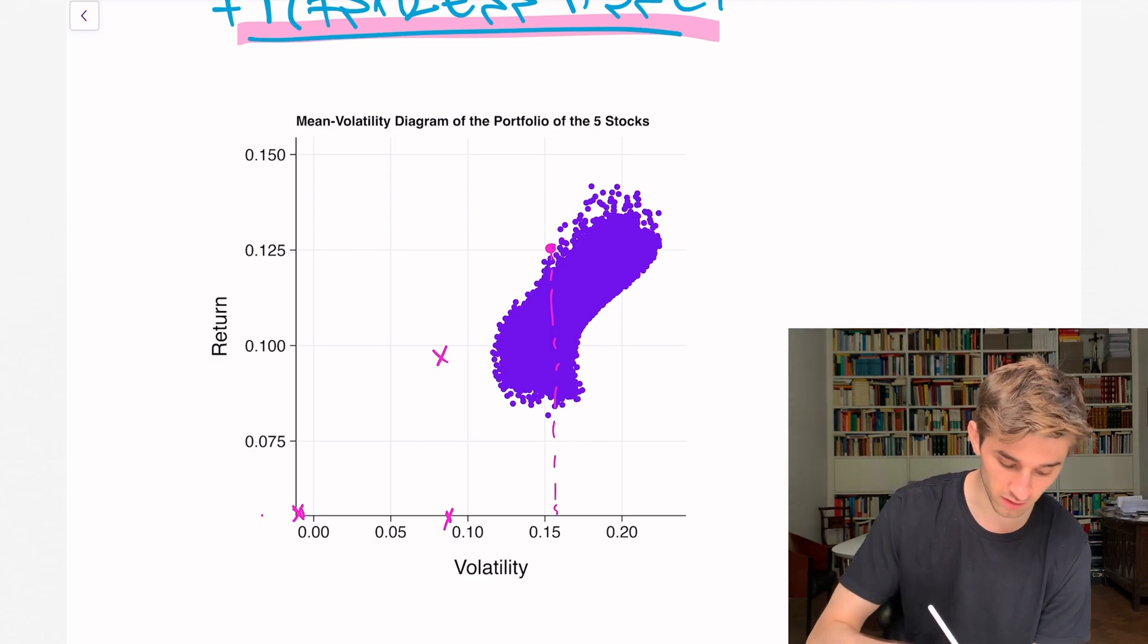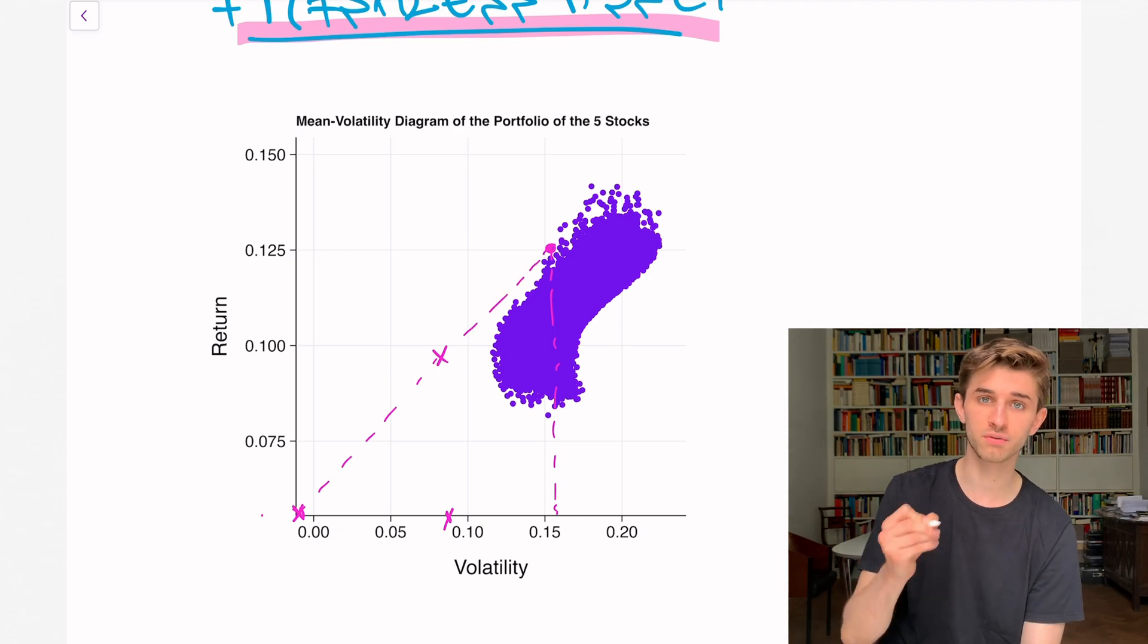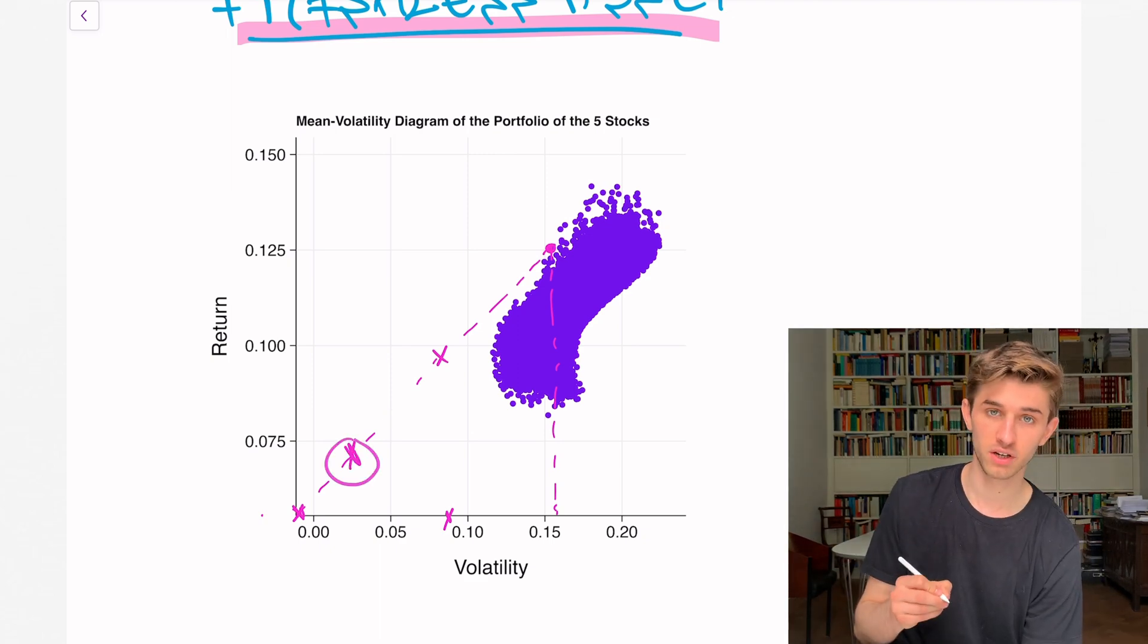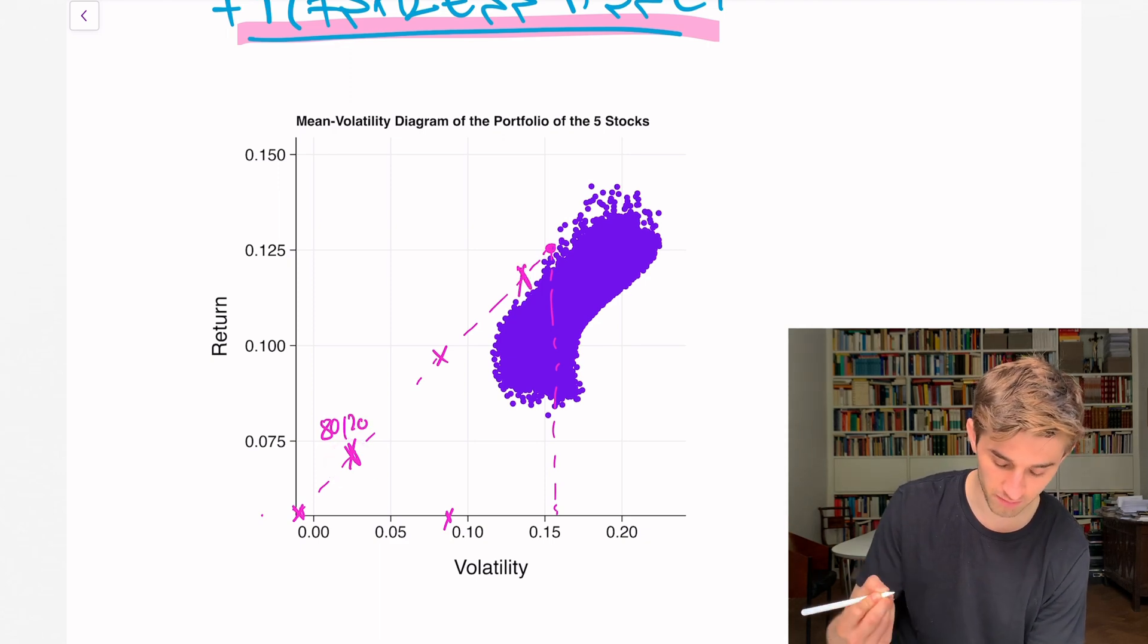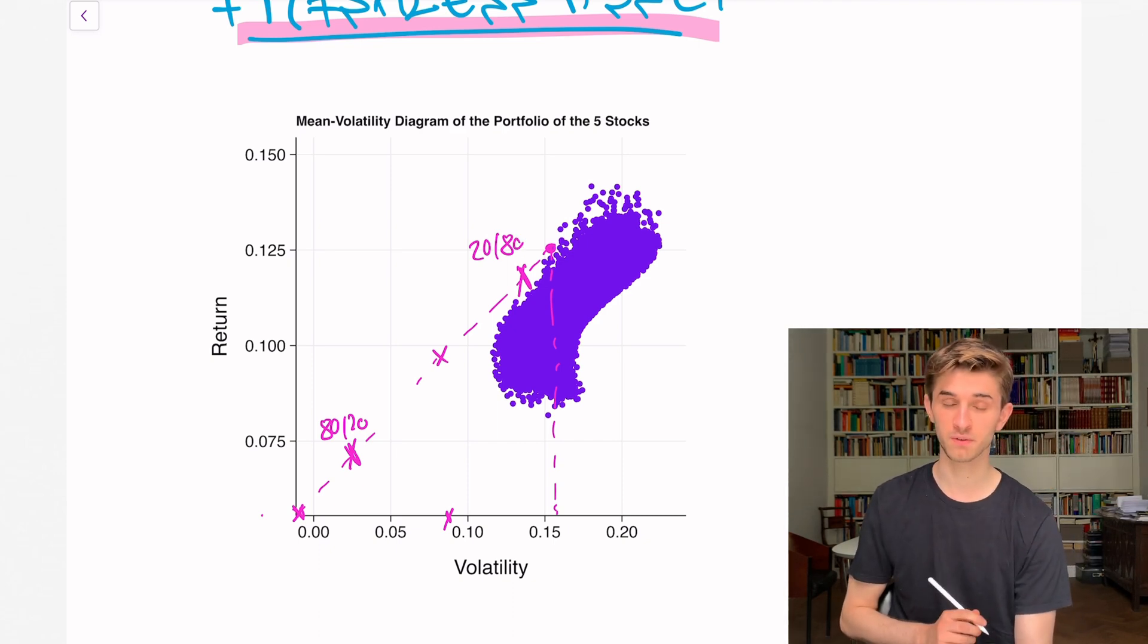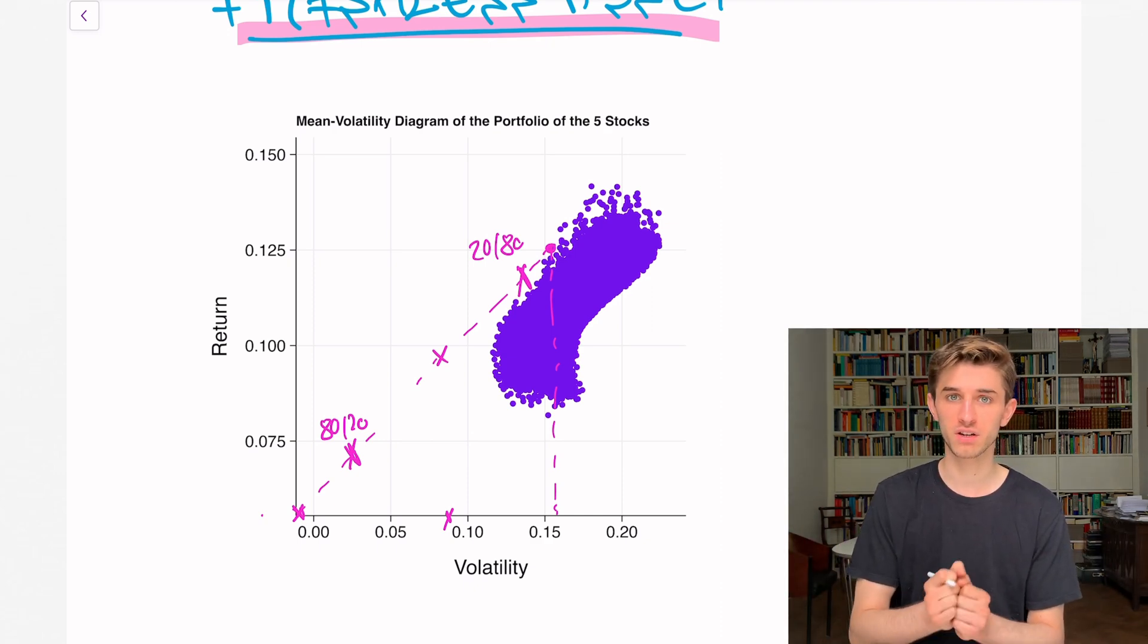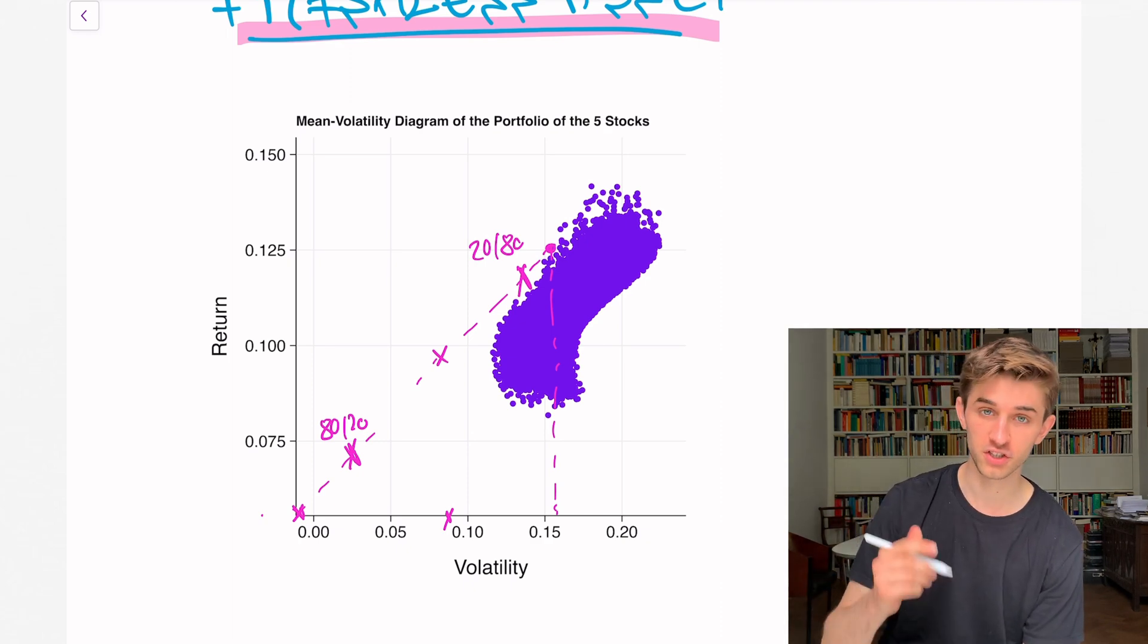The line connecting the bond and the stock portfolio shows us all risk return profiles we can achieve by mixing the stock portfolio and the bond. Here you have 80% of the bond and 20% of the stock portfolio. So the line gives us all possible return volatility combinations we can achieve by mixing the bond and that particular portfolio.